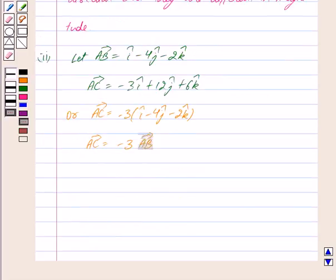So clearly we can see that vectors AC and AB have same direction, but they are different in magnitude.